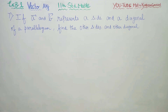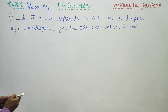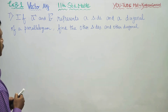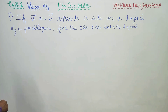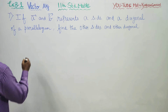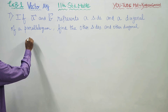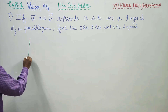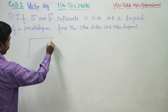Dear Learn Standard students, in exercise no. 8.1, sum no. 7, if A and B represent a side and a diagonal of a parallelogram, then we will draw a diagram of a parallelogram.